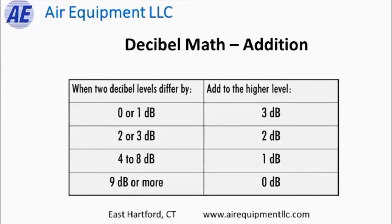So for example, one noise source at 50 and one at 49: take the louder one, 50, add three, and the net effect is 53 decibels. If the difference in decibel levels is two or three, take the louder one and add two. If the difference is between four and eight decibels, take the louder one and add one decibel. If the difference is nine or more, just take the louder noise source and that's it — because when you have two sources and one is ten or more decibels louder than the other, it is completely drowning it out.